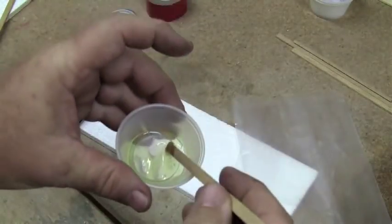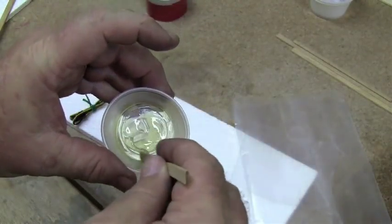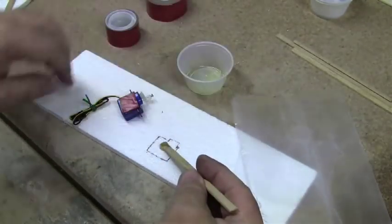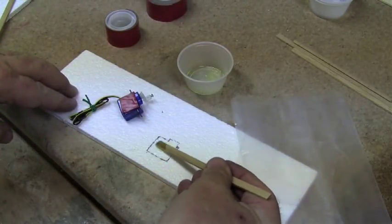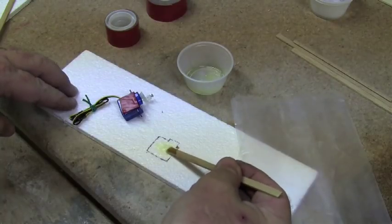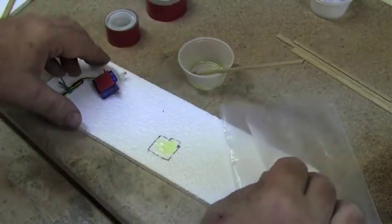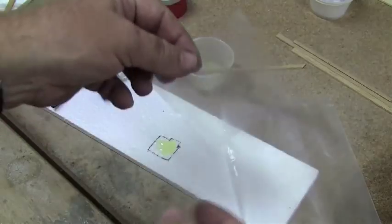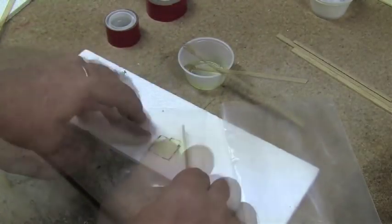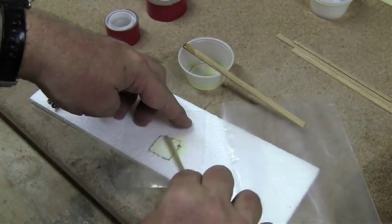Next, mix up a little bit of 15-minute epoxy. Dab it right where we want our servo - it doesn't take a whole lot. Then take some of that poly material from the poly bag and spread it out.